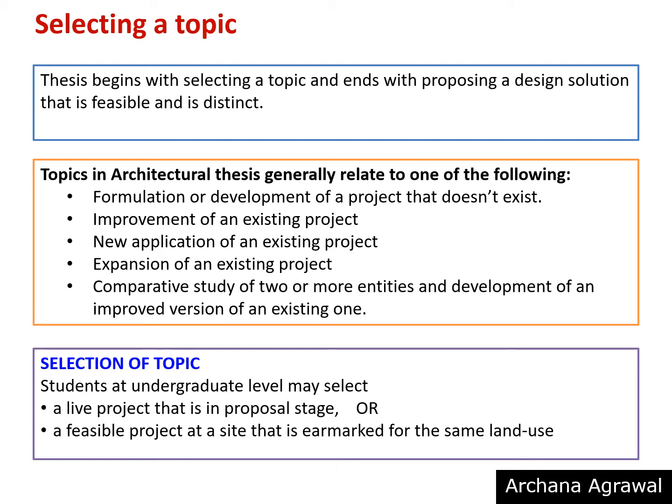At undergraduate level, a student's thesis topic can be a live project that is in proposal stage. For example, they can take a metro station proposed by the government. The project may be in design stage or in pre-feasibility stage where design has not yet started. Students can also select a topic in which they propose a project that is practically possible, provided they can justify its need and that the site selected has the same land use earmarked in the development plan.